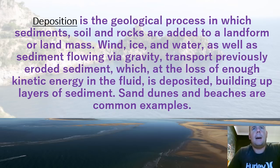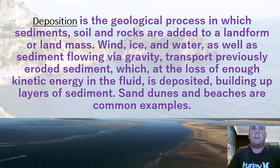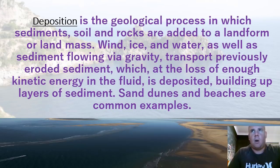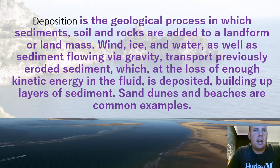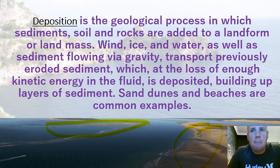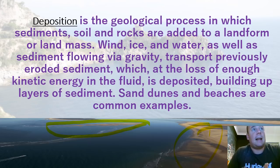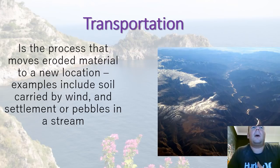Once we've got weathering and erosion happening, the material that's been broken down is moved somewhere else. Where it moves to is what we call deposition — the material is relocated to another place, again by wind, ice, water, and gravity. This picture here is a lake system similar to the one at the entrance, where you can see beaches and sand bars being created because the sand has been eroded elsewhere and moved here.